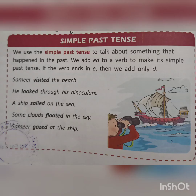Now, simple past tense. We use the simple past tense to talk about something that happened in the past — already it has happened and is finished. We add -ed to the verb to make its simple past tense. If the verb already ends in -e, then we add only -d.